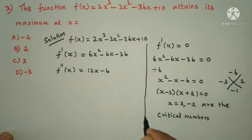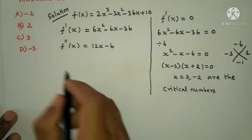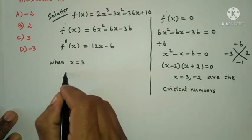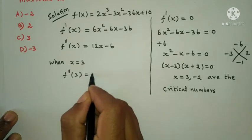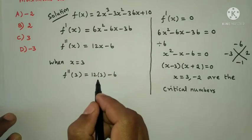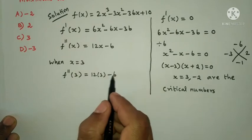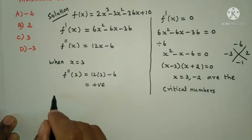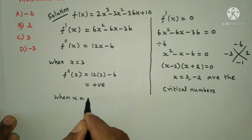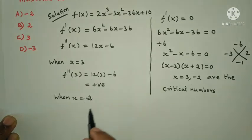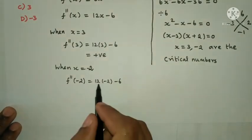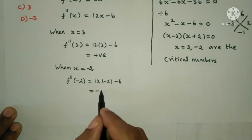Substituting x equals 3 into f''(x): f''(3) equals 12 times 3 minus 6 equals 36 minus 6 equals 30, which is positive, so x equals 3 is a minimum. Substituting x equals minus 2: f''(minus 2) equals 12 times minus 2 minus 6 equals minus 24 minus 6 equals minus 30, which is negative.